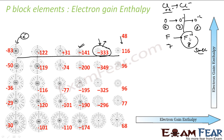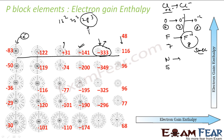Nitrogen has a positive electron gain enthalpy of +31. Nitrogen has five valence electrons with configuration 1s² 2s² 2p³ — the outermost is half-filled, which gives extra stability. If nitrogen accepts one electron, it becomes 2p⁴, which is not half-filled and therefore less stable. So nitrogen has no tendency to gain an electron, resulting in a positive electron gain enthalpy.